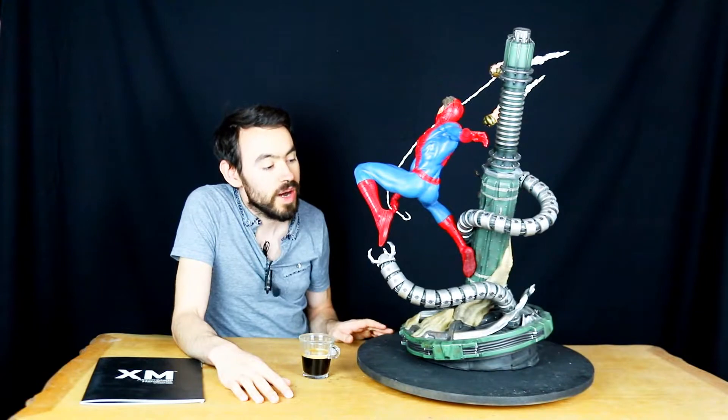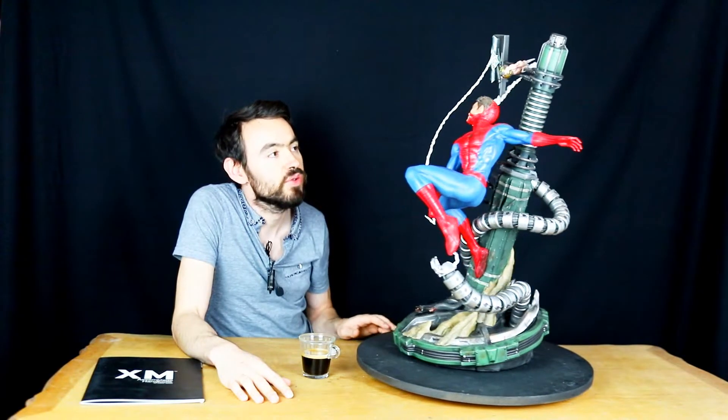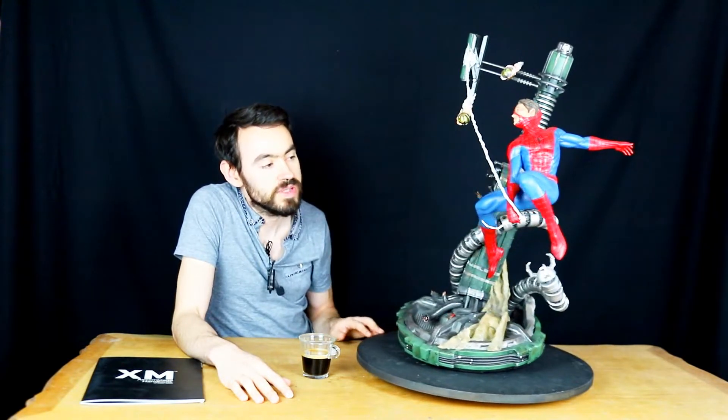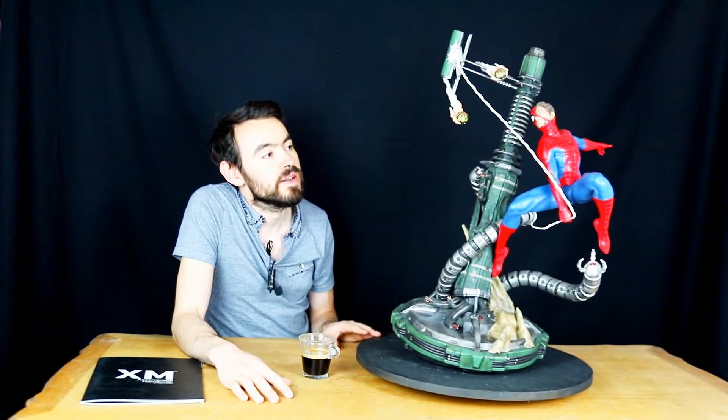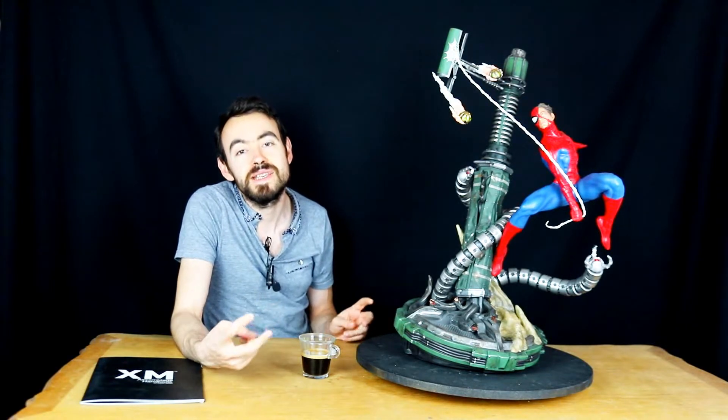Donc on a du coup sur cette réalisation la mise en scène de Spider avec 3 des super méchants qui l'affrontent fréquemment, et c'est du coup une statue qui est assez intéressante je trouve. Parce qu'en plus de nous immerger du coup dans ces affrontements avec ces Sinister Six, on a en plus une liaison, une connexion je trouve entre le héros et les super vilains en termes de statue.